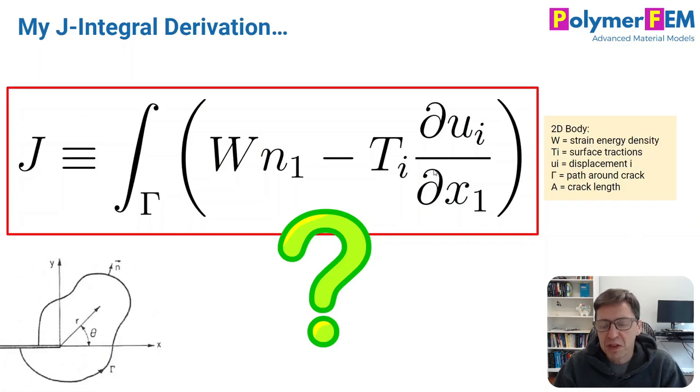Basically what I will try to do in the next few minutes is to derive this equation. It's a very basic equation and this is the definition of the J-integral. It's a little hard to figure out what this means and where it comes from, and I'm going to tell you how you can get to this.